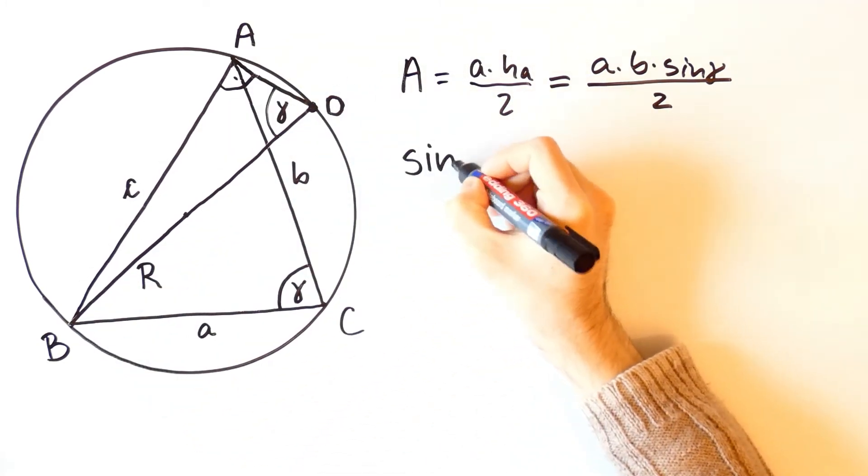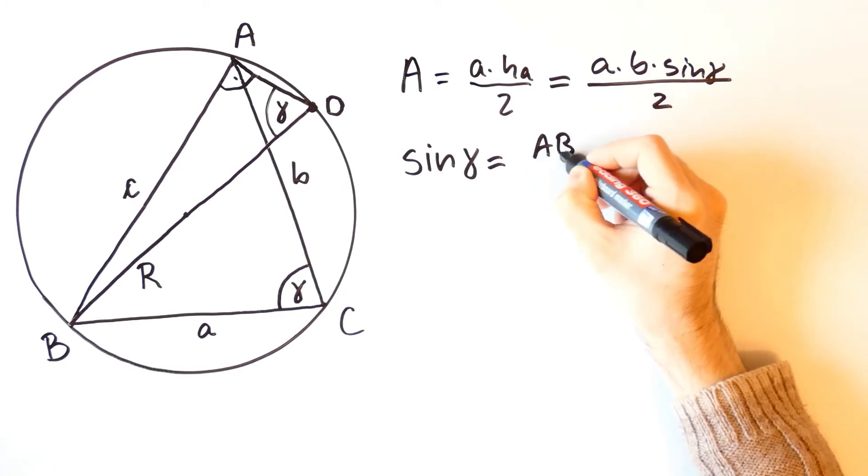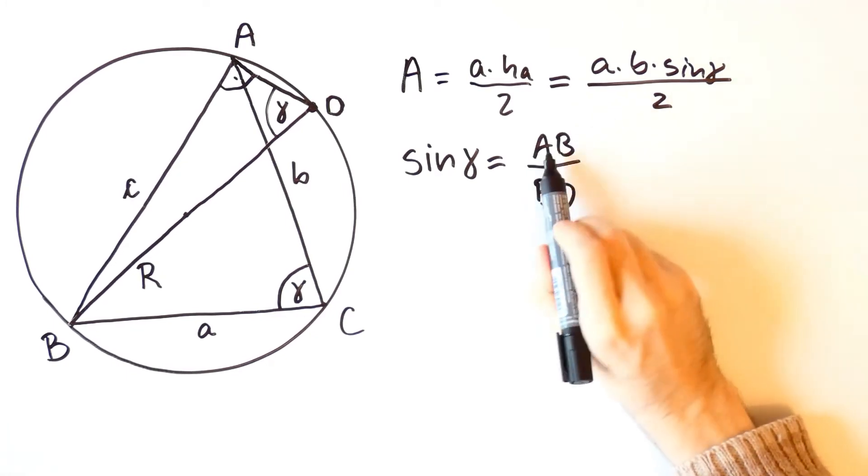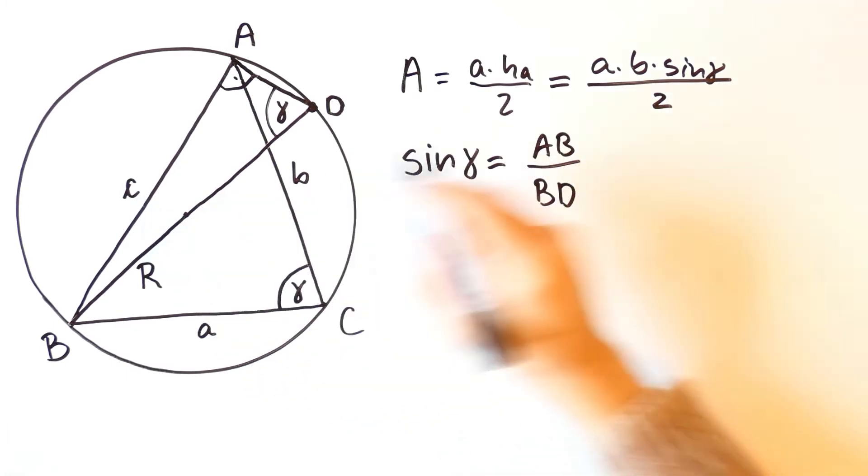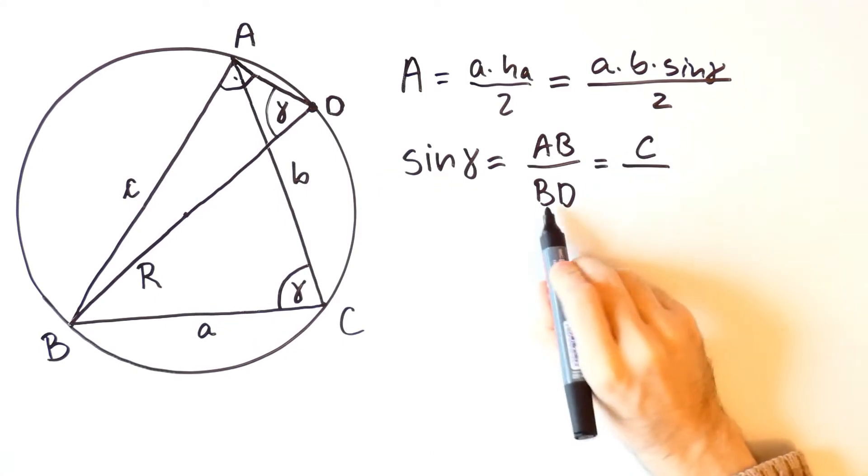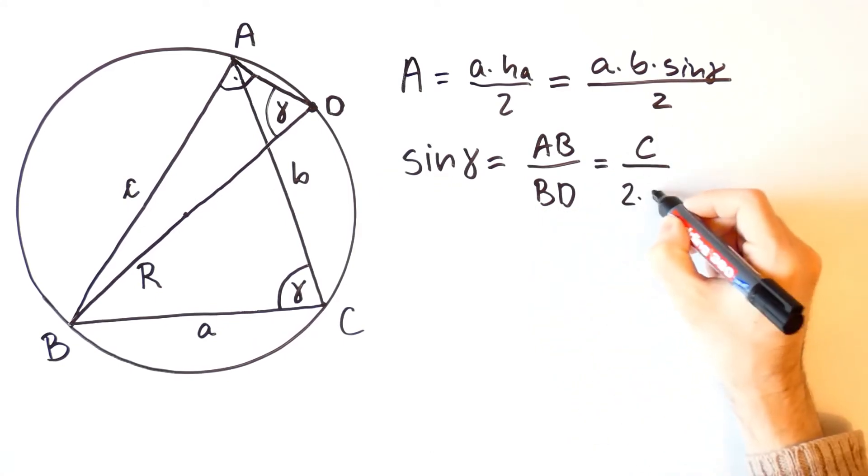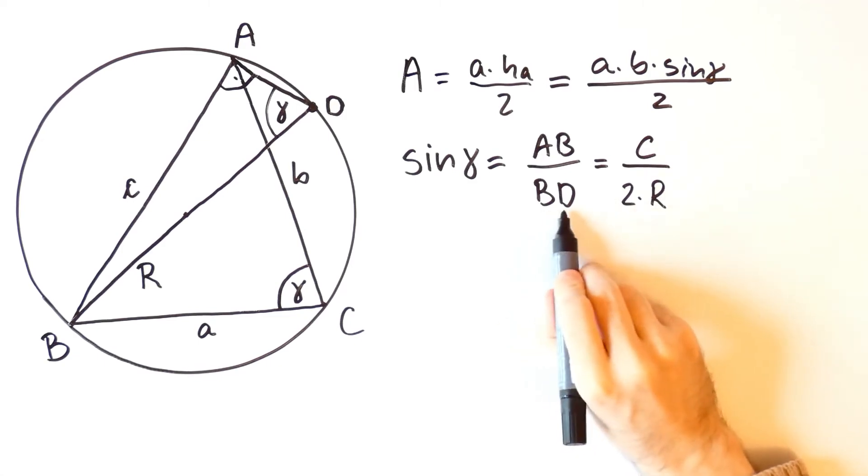But AB is equal to C and BD is equal to 2 times the radius since BD is a diameter.